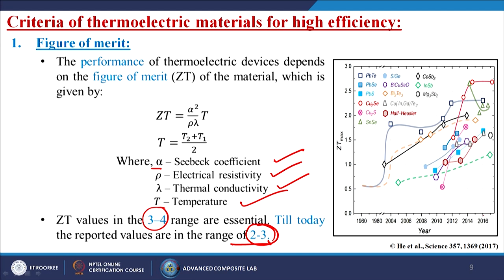This is basically how progress has been made with different materials. People are now using indium and antimony combinations, copper selenium materials, and other types of combinations to reach ZT of 3 to 4.